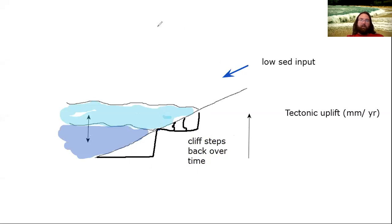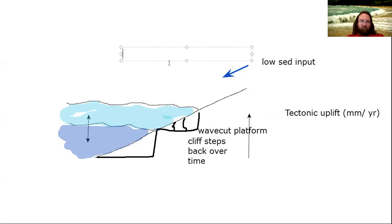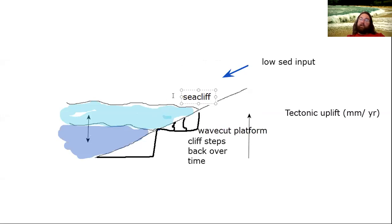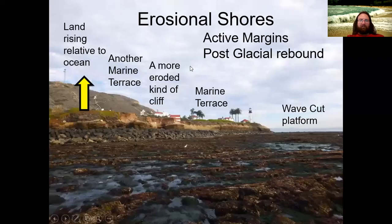When this happens, you get a wave-cut platform — a flat surface eroded by the waves — and a sea cliff. When these are raised up above any possible future sea level, they become known collectively as a marine terrace. Let's go over to the plot to see how these play out.